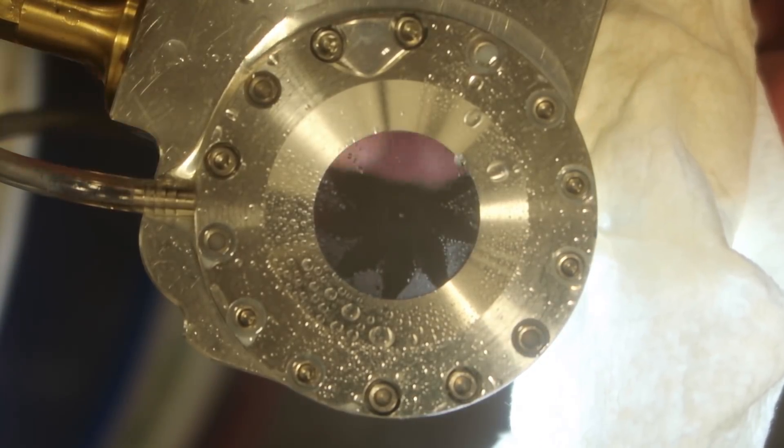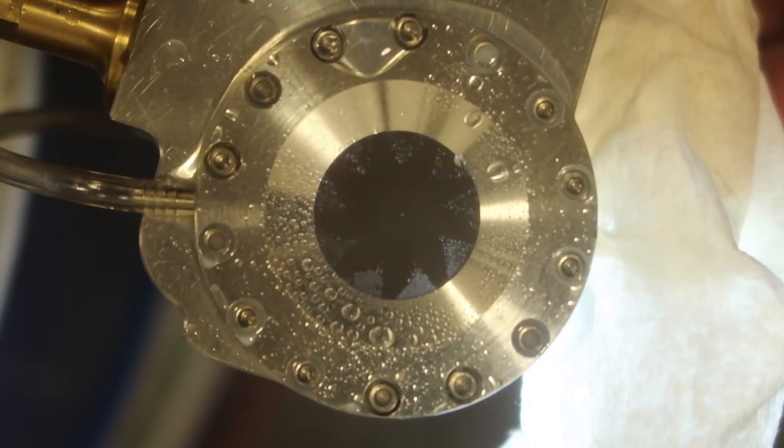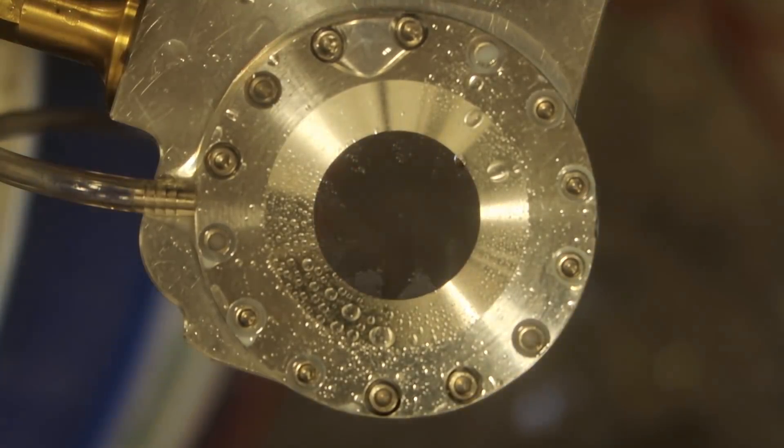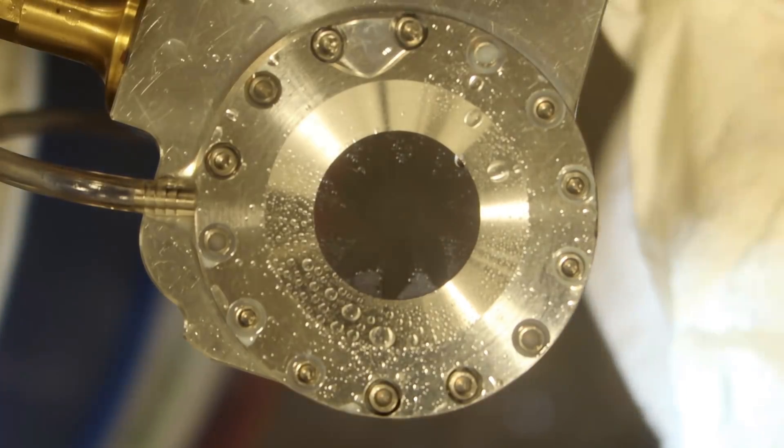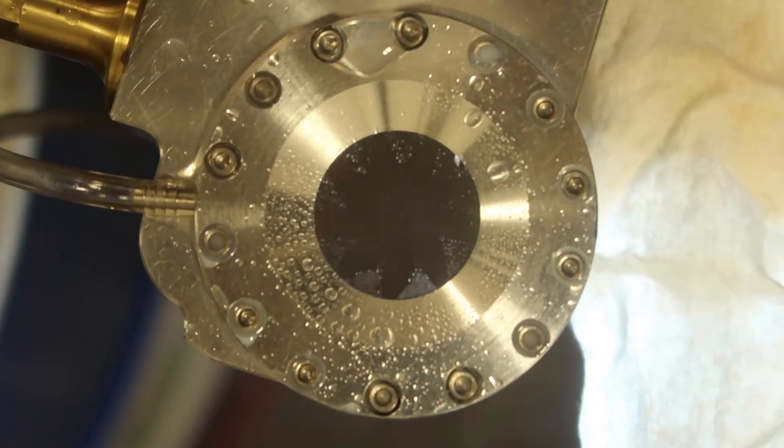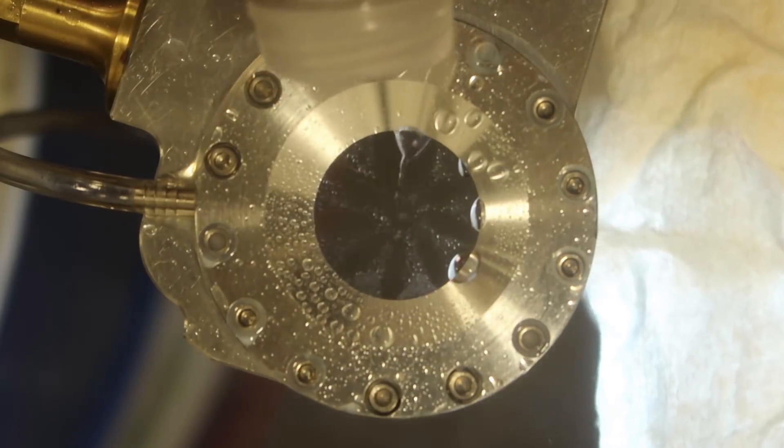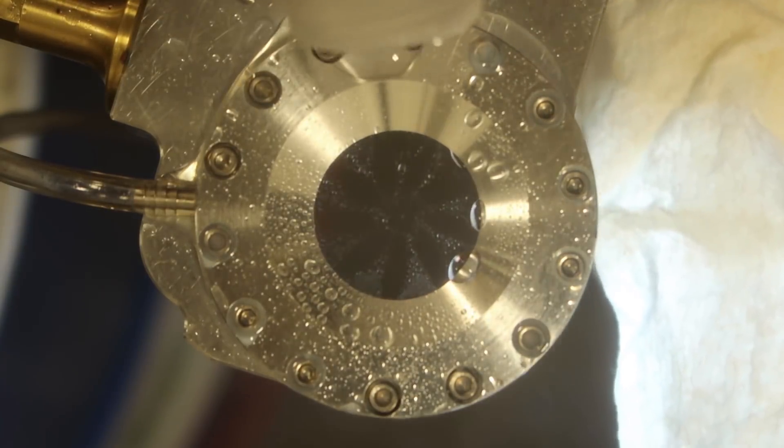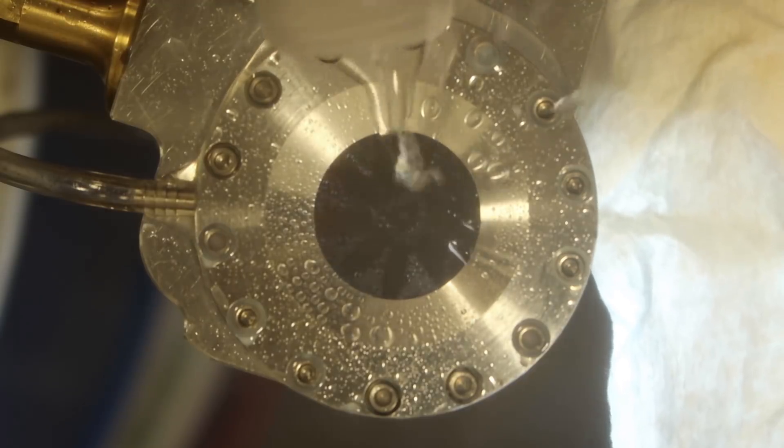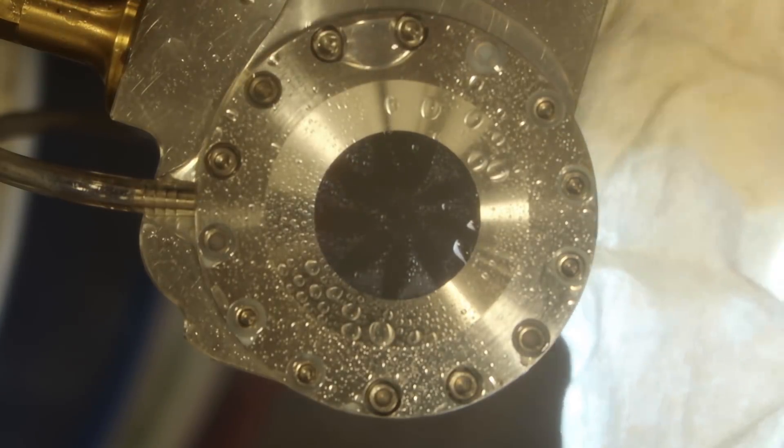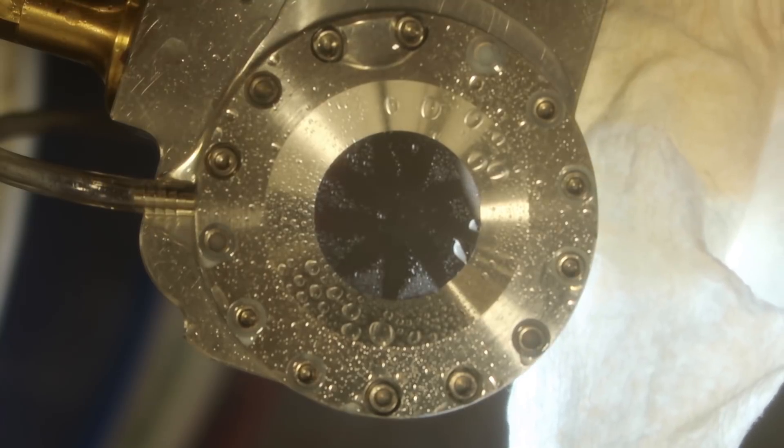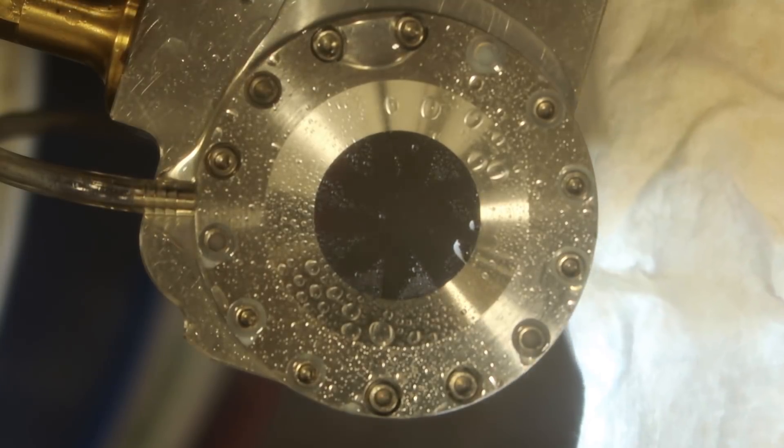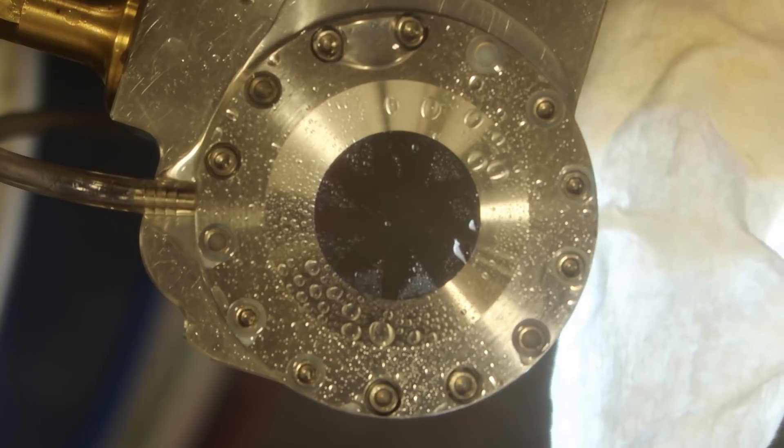The next thing I tried was to mill very shallow grooves using a 32nd inch ball end mill. I just milled little grooves radially out on the next one and you'll see in a minute how that worked.